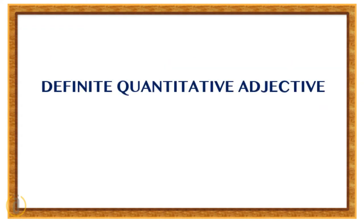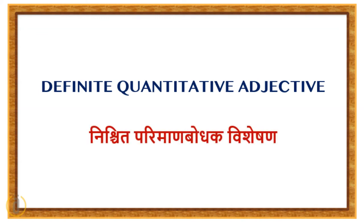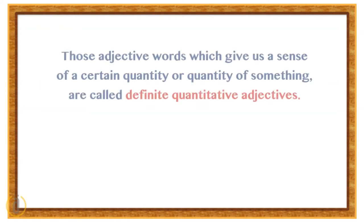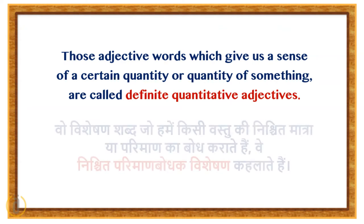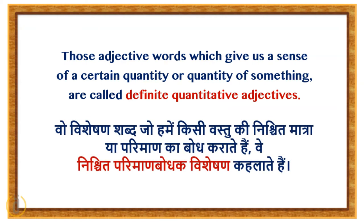Definite quantitative adjective — Mishit pariman vachak vishetian. Those adjective words which give us a sense of certain quantity of something are called definite quantitative adjectives. Woh vishetian shabd jo hume kishi vastu ki mishit matra ya pariman ka bodh karate hai, we mishit pariman bodhak vishetian kehelate hai.